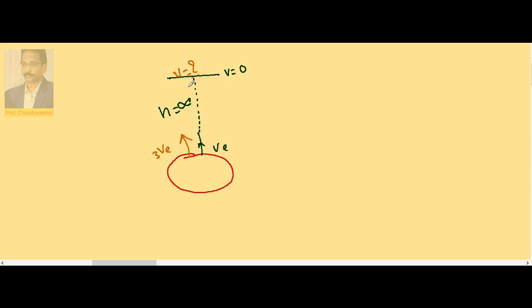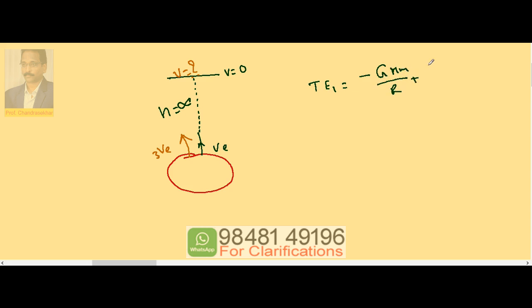Apply law of conservation of energy. So initial total energy - body is projected from the ground, so it is -GMm/R for potential, kinetic is (1/2)m into 3 times the escape velocity, (3v_e)².